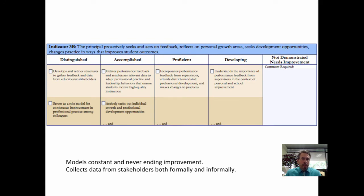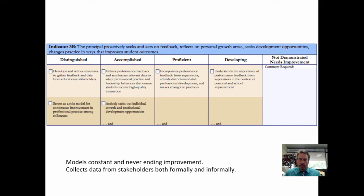The second indicator in Standard 3 is that the principal proactively seeks and acts on feedback, reflects on personal growth areas, seeks development opportunities, and changes practice in ways that improve student outcomes. This is related to the first indicator in that we're not going to just accept the way things always have been. If something isn't working well, we want to make sure that we're trying to improve it, and we want to do it first with ourselves.